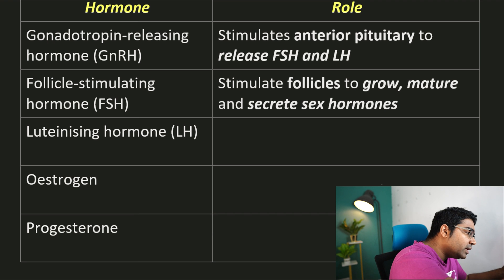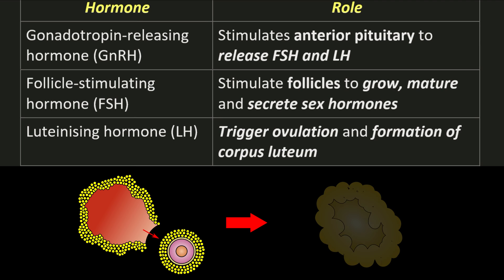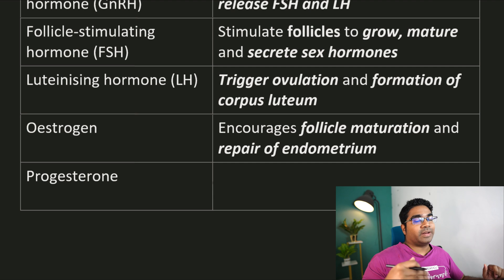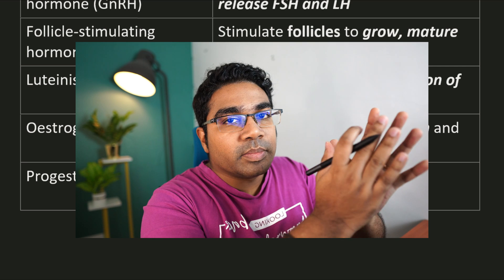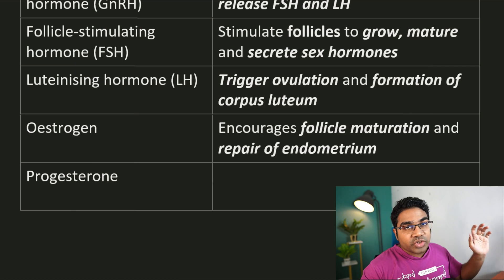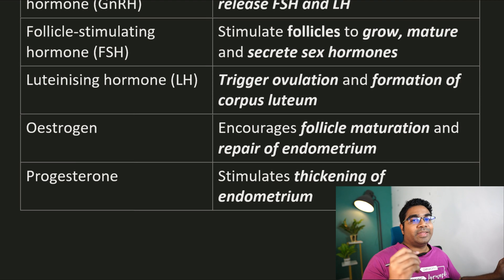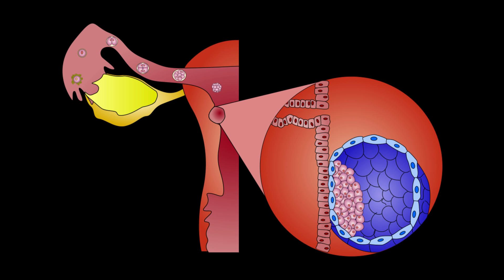The role of LH is mainly in ovulation — to trigger ovulation and the formation of the corpus luteum. Estrogen encourages follicle maturation as well as repair of the endometrium at the beginning of the menstrual cycle. Progesterone, on the other hand, thickens the endometrium and prepares it for implantation and pregnancy.